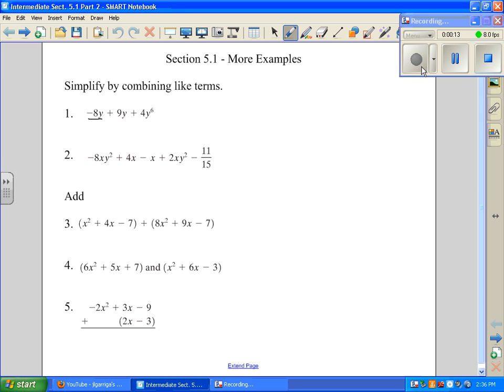So I have negative 8y and a positive 9y. And whenever I add those together, I'm going to get positive 1y plus 4y to the 6. Now, I cannot add a y term and a y to the 6 term, so my answer is just going to be 4y to the 6 plus y. And this is written in descending order according to the y variable because this one's to the 6th power and this one's only to the 1st power.